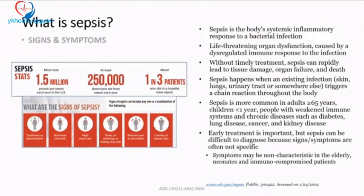Sepsis occurs when an existing infection — from skin, lungs, urinary tract, or any focus — triggers a chain of reactions. It is more common in extremes of age: under one year or over 65. Immunocompromised patients with chronic diseases like diabetes, kidney disease, cancer, or chronic lung disease are at higher risk. Early diagnosis is essential for early treatment.